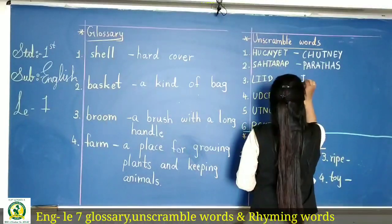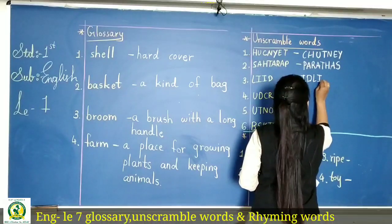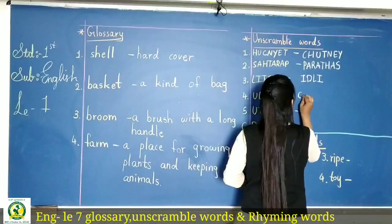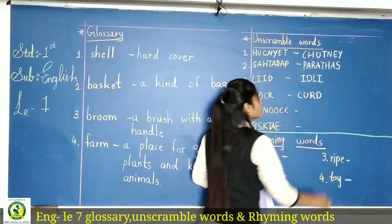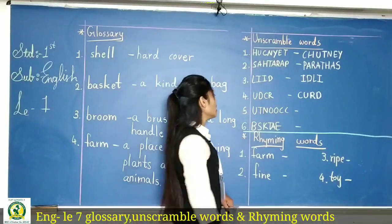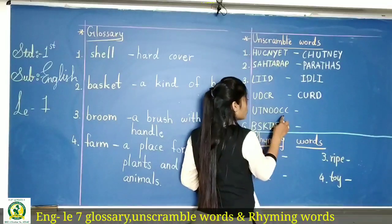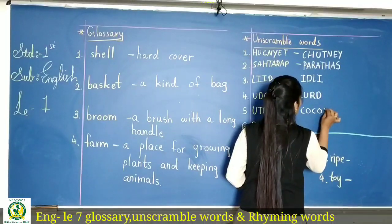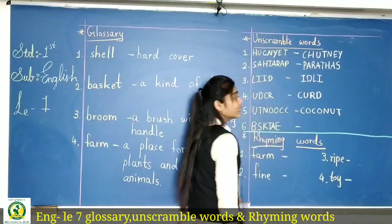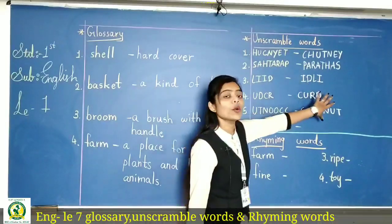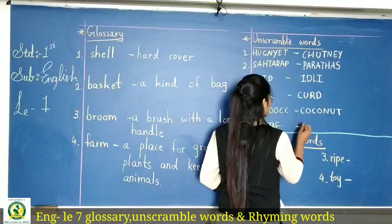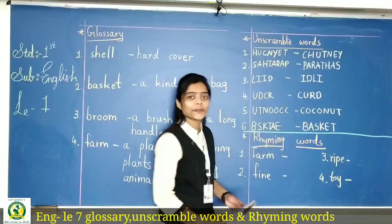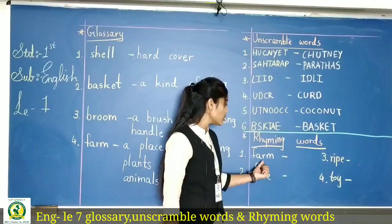Then u-d-c-r matlab yahan pe banega C-U-R-D, curd. Then yahan pe u-t-n double-o double-c — kaun si spelling banega? Coconut — C-O-C-O-N-U-T, coconut. Yeh unscramble hai aur isko humne scramble kiya. Then basket — B-A-S-K-E-T, basket.